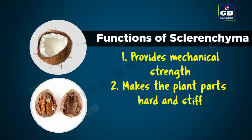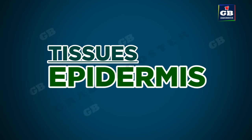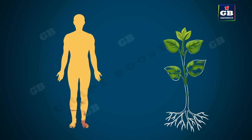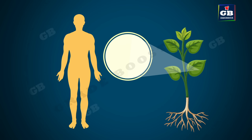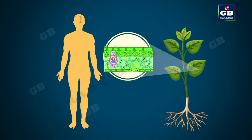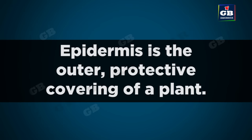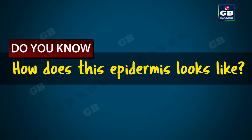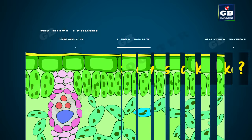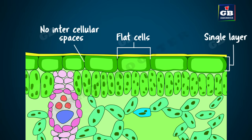Now let us learn about epidermis. Just like how our bodies are protected by skin, the plant bodies are protected by a layer of cells called epidermis. Epidermis is the outer protective covering of a plant. In most cases, the epidermis is single layered. It is mostly flat and forms a continuous layer without any intercellular spaces.